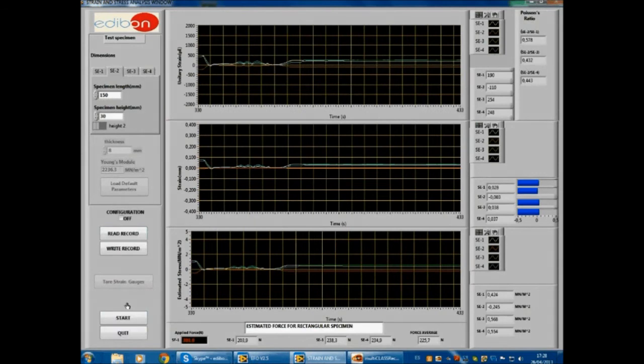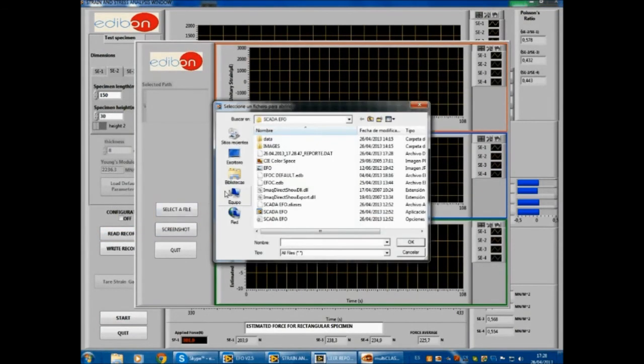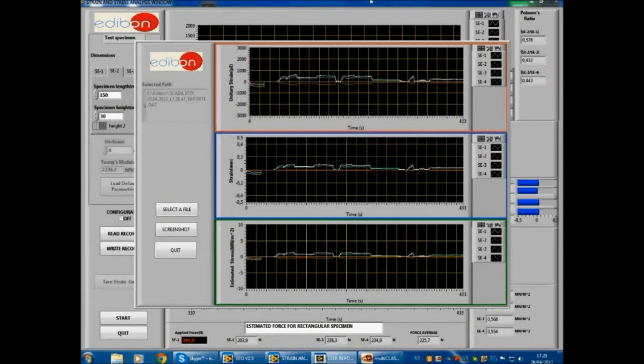Then stop the system. Press the write record button that just appeared. Once it has written the file, click read record and select the file that was just saved. This will display a full representation of the data that was obtained. It will show three graphs: engineering strain, elongation, and stress.